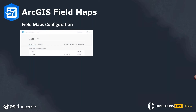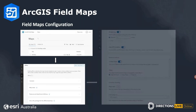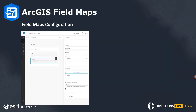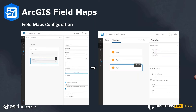Here we can see an overview of the Field Maps project configuration page, including project settings such as streaming settings, location sharing, and feature collection settings. We can also see the smart form configuration page and the template setup. Smart forms are the interactive forms used when collecting data — they can be populated with radio-style buttons and lists, or enable workers to collect strings of information. Templates are used to pre-fill fields to enable faster data collection for mobile workers.